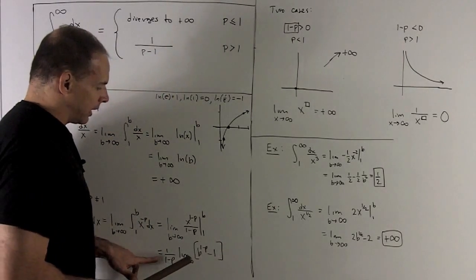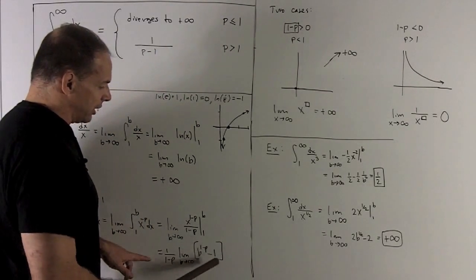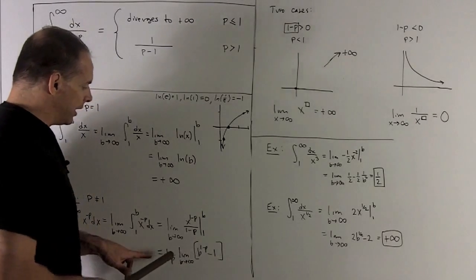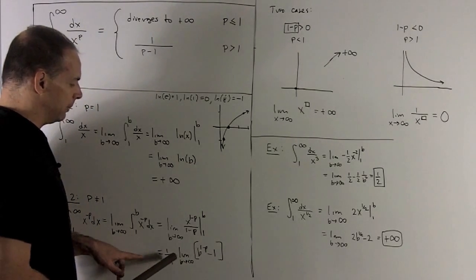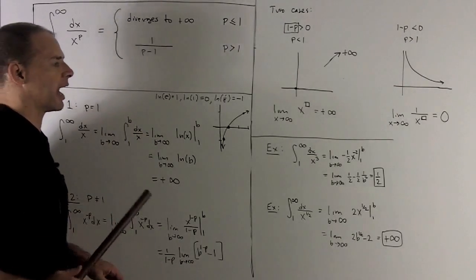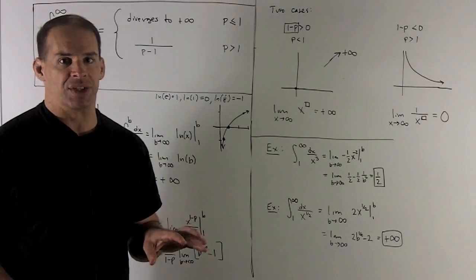And then you note, we're going to put a 0 in here. So that's going to leave this limit turning into a minus 1. And then when it hits the 1 over 1 minus p, that's just going to change it into 1 over p minus 1, just like that. So that's our improper integral and the two cases.